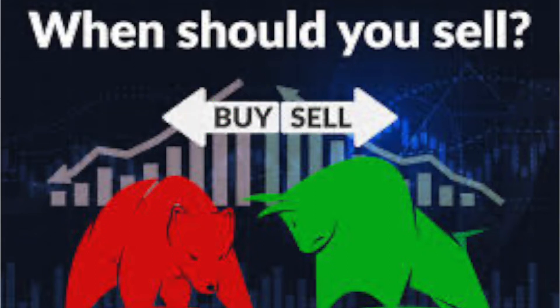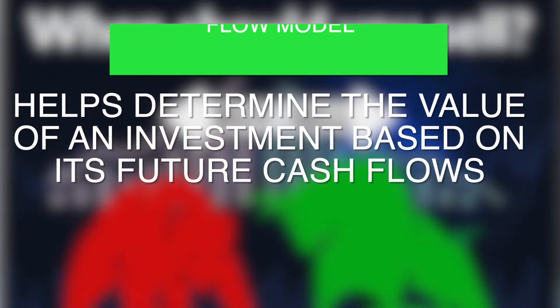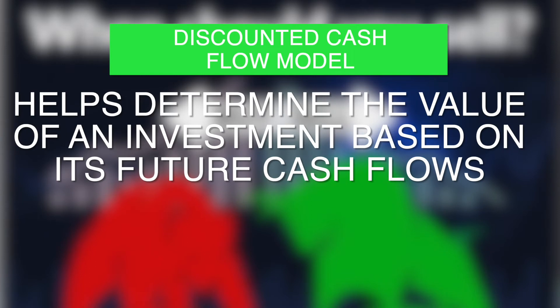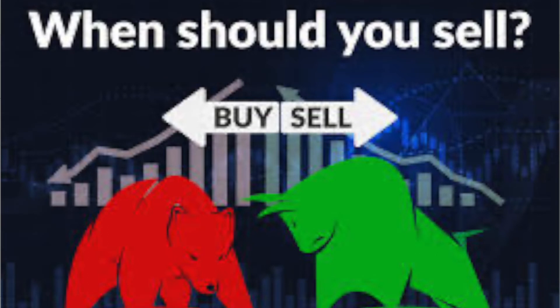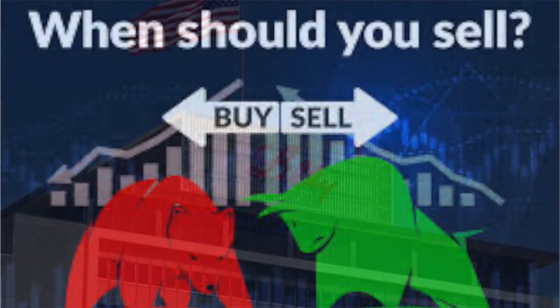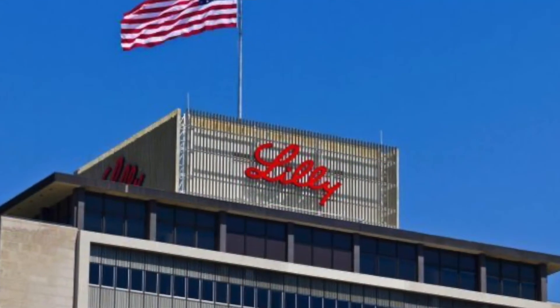Do you ever look at a stock and wonder: is this a good buy? Should I buy it at this price or wait for it to go lower? Or do you own a stock and ask should I sell now? You never really know. That's why I'm going to show you how to run a discounted cash flow model. This figures out the intrinsic value of a stock. I'm going to do Eli Lilly.